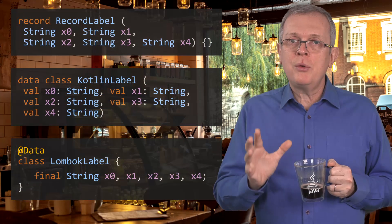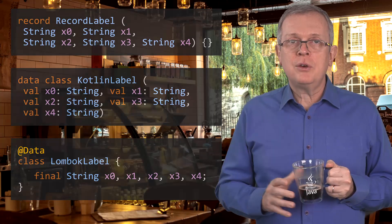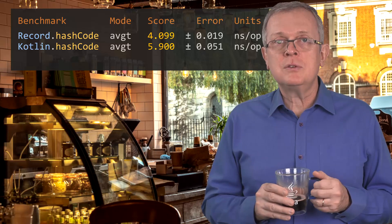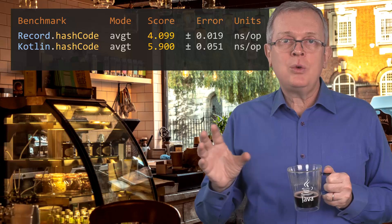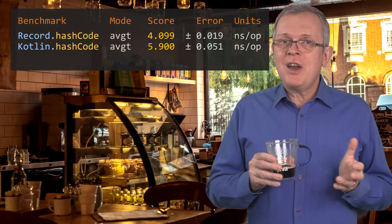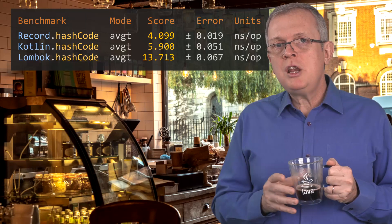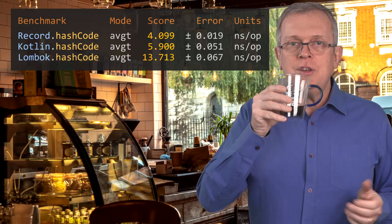The performances are not the same between records, Lombok, and Kotlin when it comes to equals and hashCode computation. Here is an example computed on a record holding just five strings of characters. Let us first evaluate the performances of the hashCode implementation. We fill this record with random strings of characters and we can see that there is about a 50% difference between a classical record and the equivalent Kotlin data class. In fact, it's a 2-nanosecond difference, so even if significant, it's not that much. Lombok is really behind with an implementation that is three times slower.